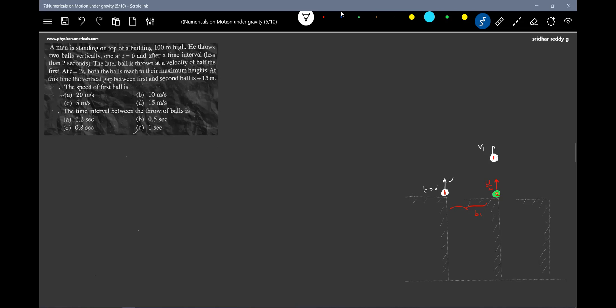Finally, after time, until the later body is thrown, both the balls reach the maximum heights at t equal to t seconds. At t equal to t seconds, both balls will reach the maximum height. Ball one will be at t equal to t seconds, ball two will be at its maximum height. This is the maximum height of the second ball, this is the maximum height of the first ball.